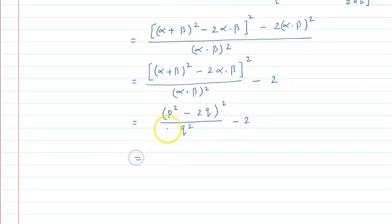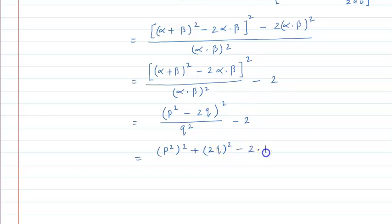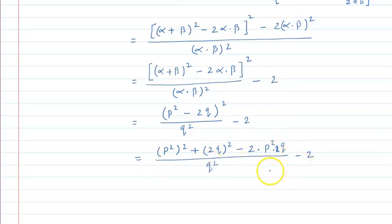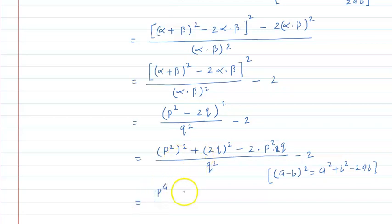अब यहाँ A = p² और B = 2q मानकर (A - B)² की identity use करते हैं: (A - B)² = A² + B² - 2AB. So (p² - 2q)² = p⁴ + 4q² - 4p²q. तो यह बन जाएगा: (p⁴ + 4q² - 4p²q) / q², minus 2.